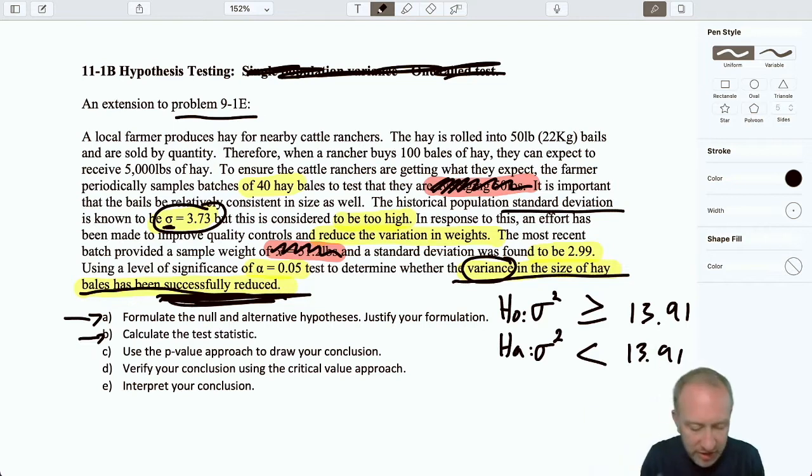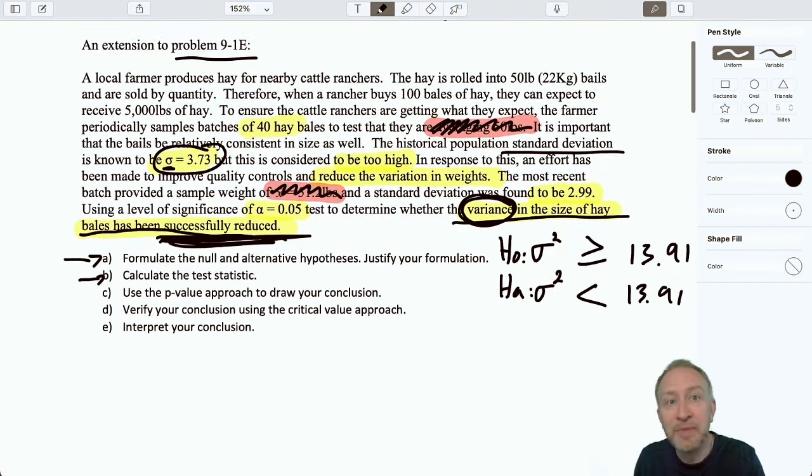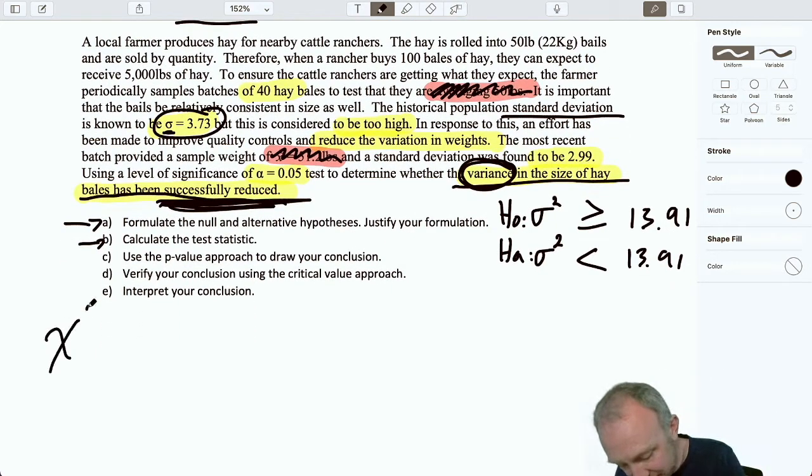Our test statistic. Again, once we recognize that we're doing a test on variance, as we go through these different problems, these different types of problems, you're building up this toolkit, all of these different tools that you know how to use. But you really have to remember when each tool is appropriate. So here I can see, okay, I'm doing a test on variance. I reach into my toolkit, and the tool that I need right now is this chi-squared calculation.